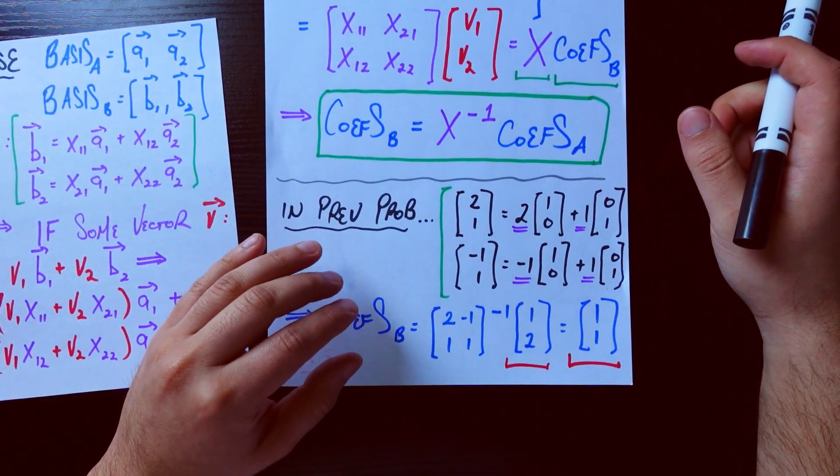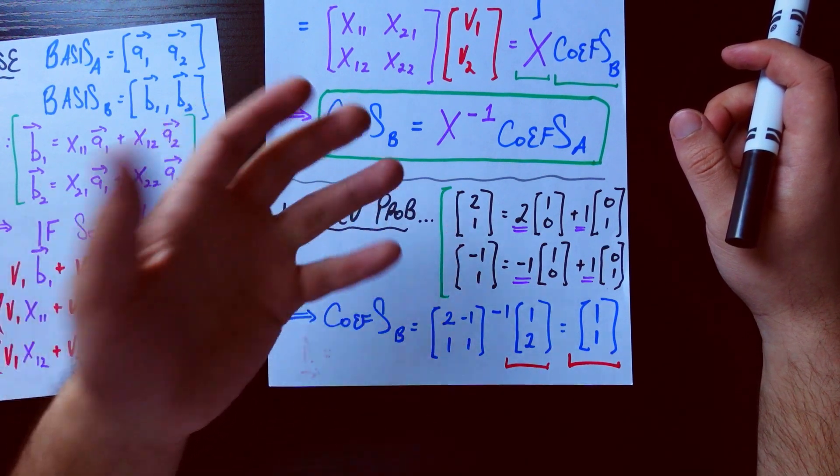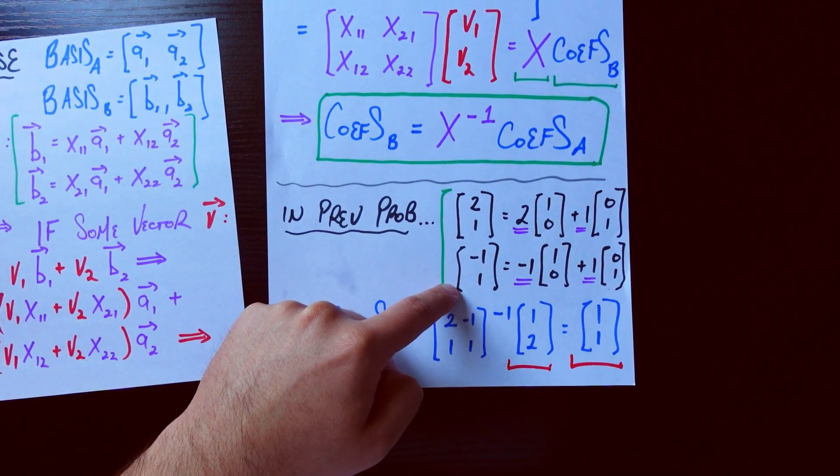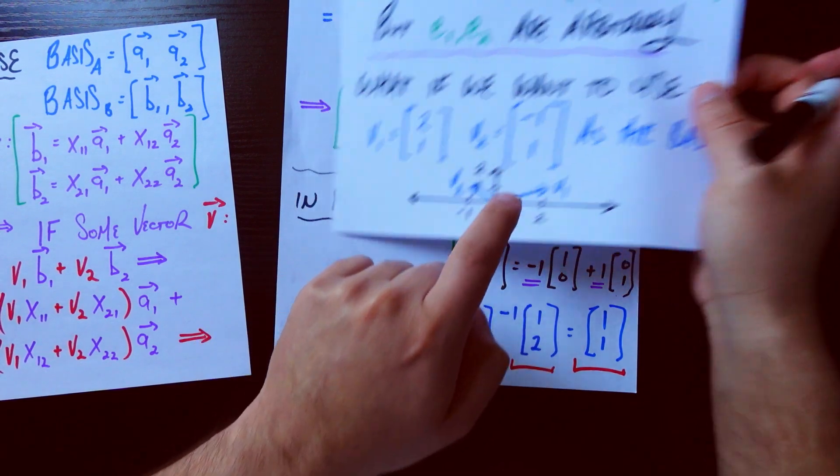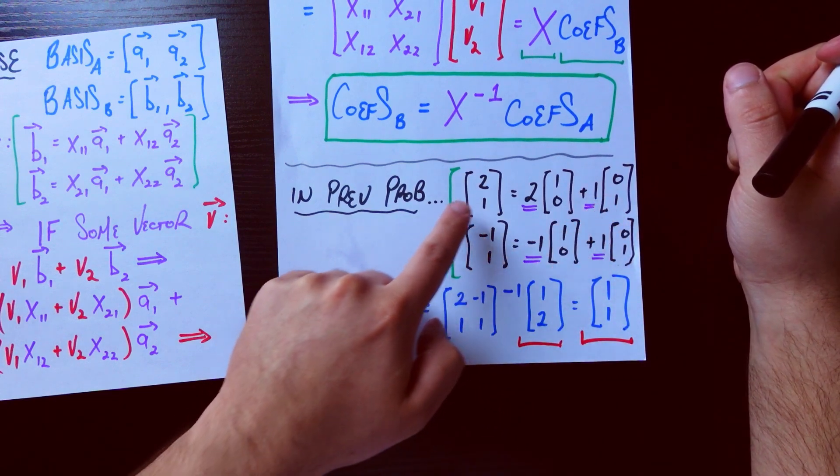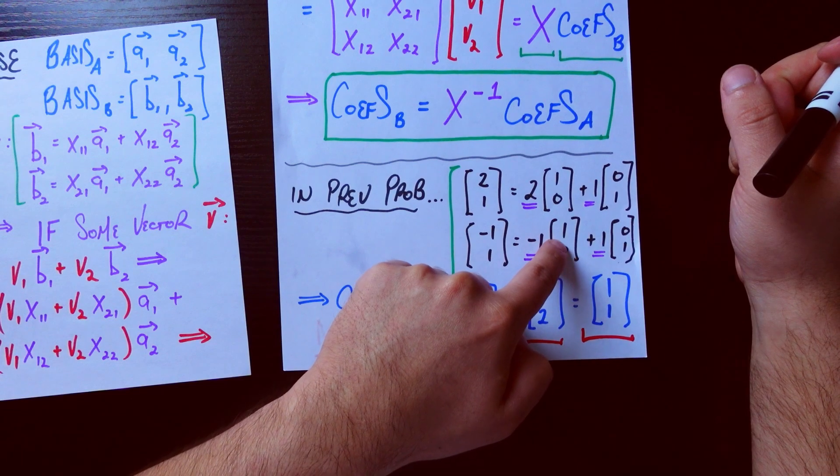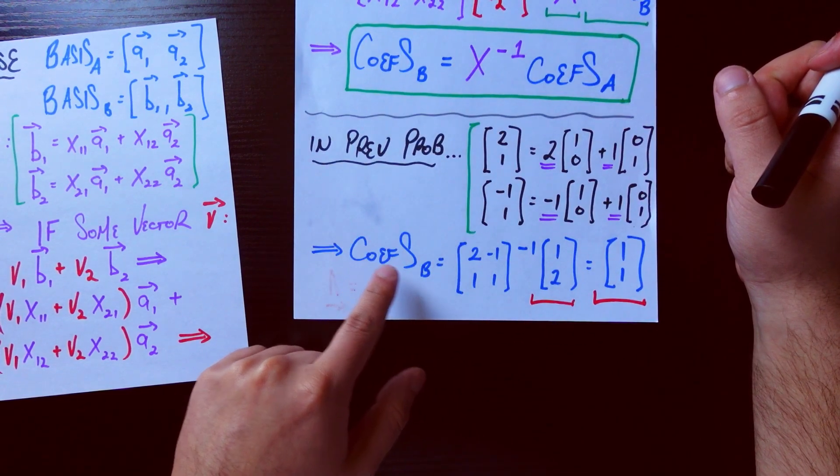So in the original problem we were looking at, if we go ahead and apply this technique, we were looking to represent our basis now as [2,1] and [-1,1]. We just flash back to this paper here to remind you of that. [2,1] and [-1,1]. We can represent that as 2 times e1 plus 1 times e2. We can represent the second potential basis vector as -1 times e1 plus 1 times e2.